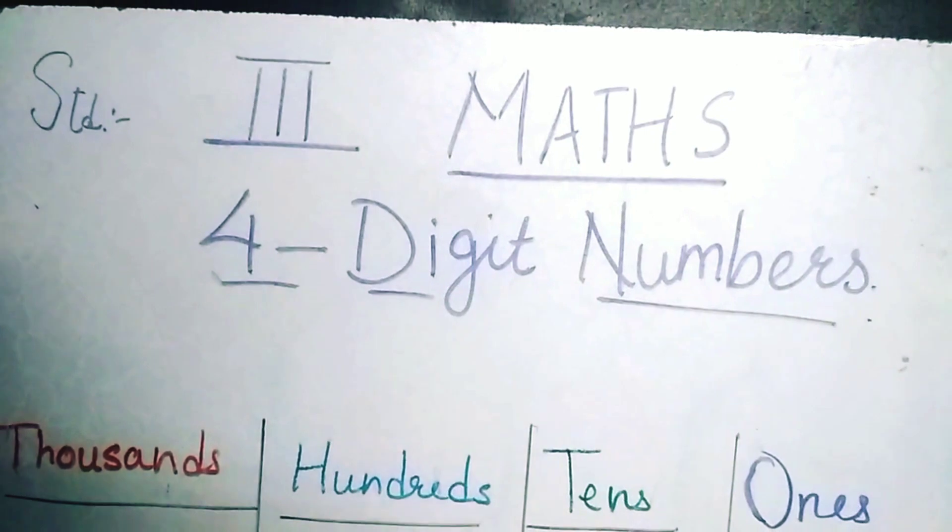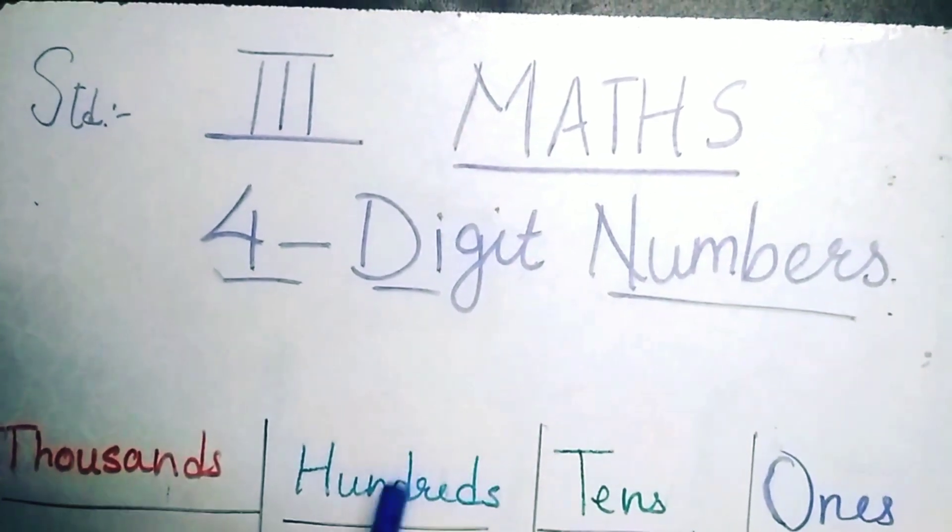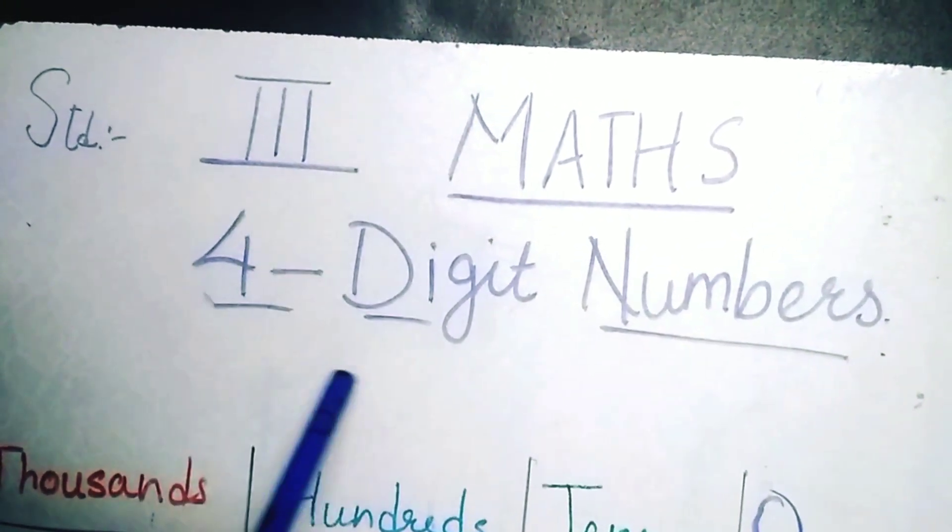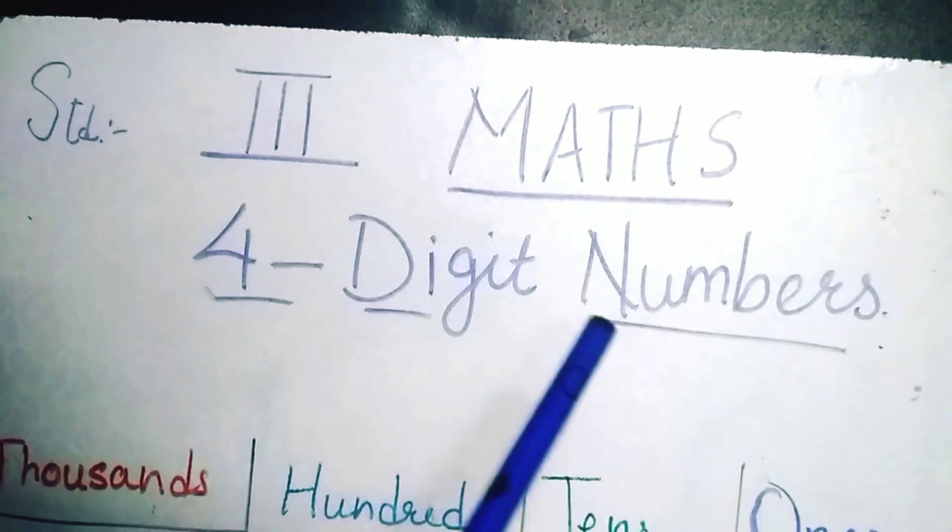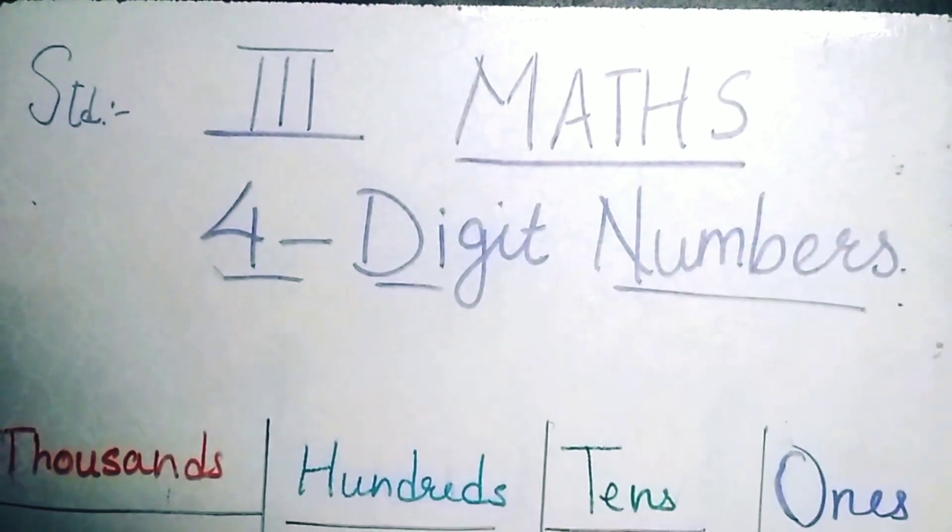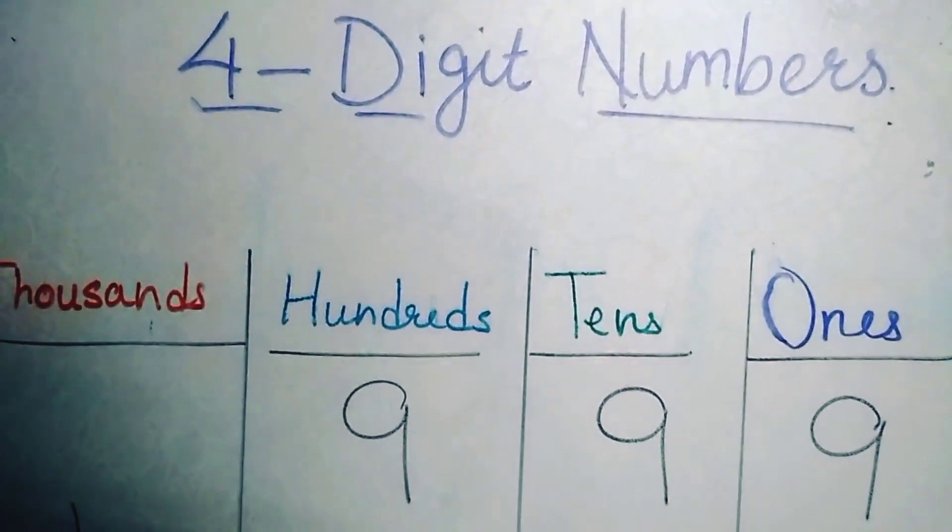Till class 2 you have learned ones, tens, hundreds. Now you have come in class 3 so you will be having four-digit numbers. So let us revise. Until class 2 you have learned from 1 to 999.